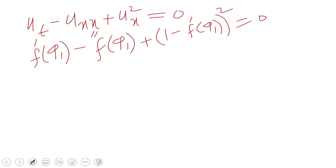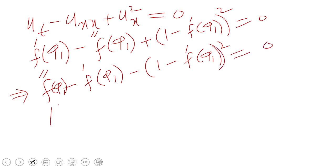So a little bit simplification. You see, this is a differential equation of one variable phi 1. So this implies F double dash minus F dash, all are function of phi 1, minus F dash of phi 1 whole square. This is the required ODE.